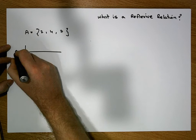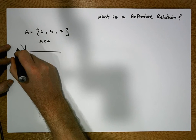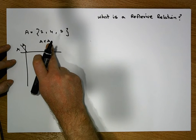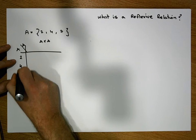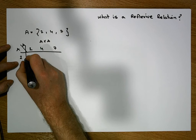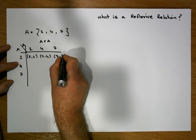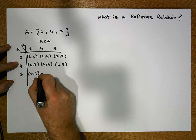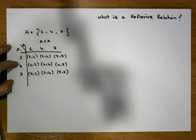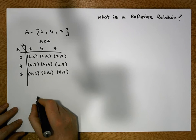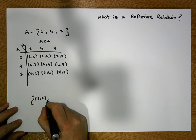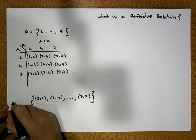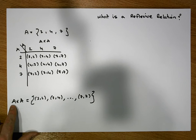We constructed the cross product A cross A through a table technique where the domain values are listed down the first column and the range values are listed across the first row. So we had 2, 4, 7 giving ordered pairs: (2,2), (2,4), (2,7), (4,2), (4,4), (4,7), (7,2), (7,4), and (7,7). We placed all those values into a set — that was A cross A, the cross product of set A with itself.